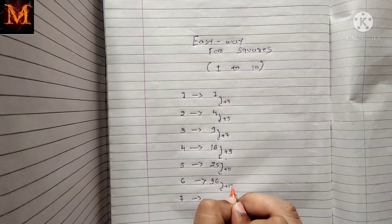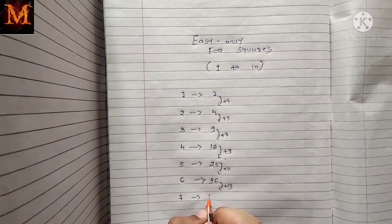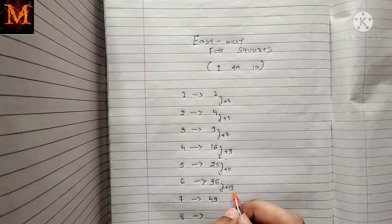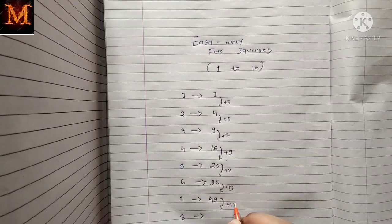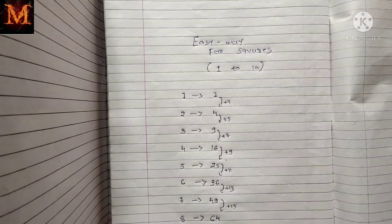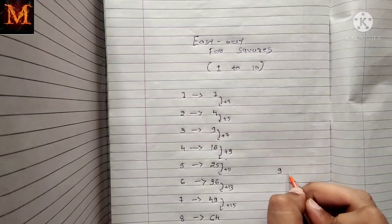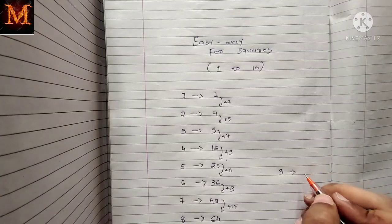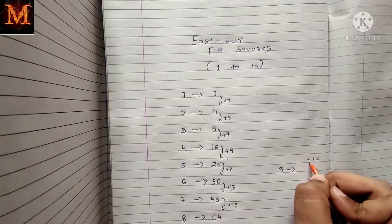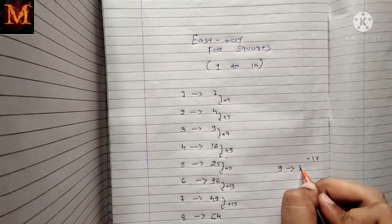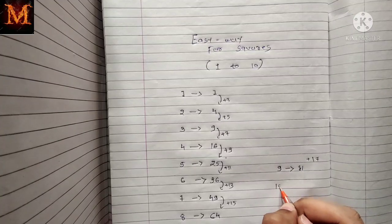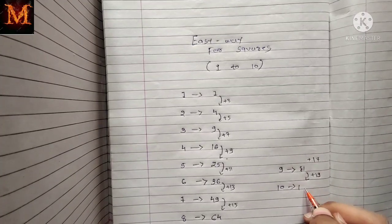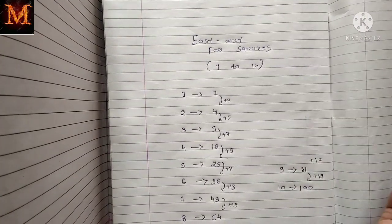Square of 7: add plus 2 to get plus 13, so 36 plus 13 is 49. Square of 8: add plus 2 to get plus 15, so 49 plus 15 is 64. Square of 9: add plus 2 to get plus 17, so 64 plus 17 is 81. Square of 10: add plus 2 to get plus 19, so 81 plus 19 is 100. See, this is a very easy method!